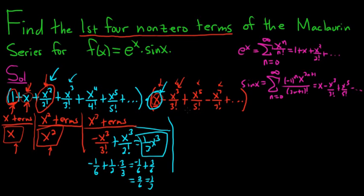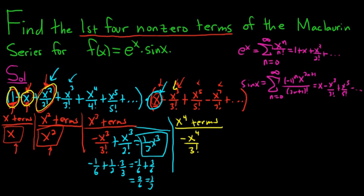Now let's look at x to the fourth terms. We can't use the 1 because it only gives odd powers. Using x, we can do x times negative x cubed over 3 factorial, giving negative x to the fourth over 3 factorial. Then using x cubed over 3 factorial times x gives plus x to the fourth over 3 factorial. These cancel, so x to the fourth gives 0 — no fourth power term.